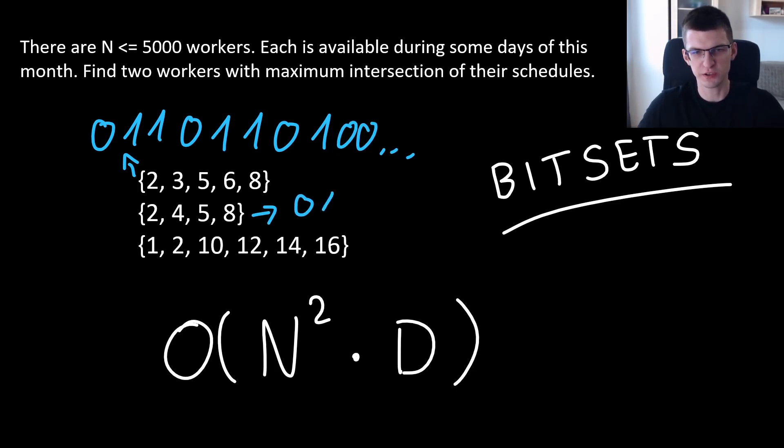Similarly, this will be 0, 1, 0, 1, 1 and so on. And this will be 1, 1 for 1st and 2nd day, a lot of 0s, then eventually 1 for 10, 0, 1 and so on.